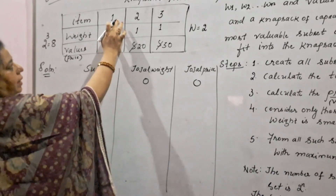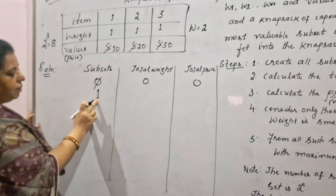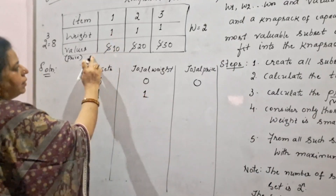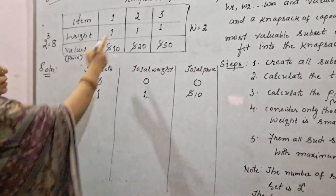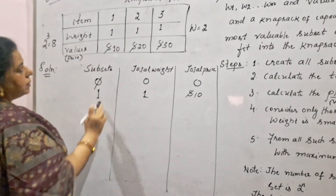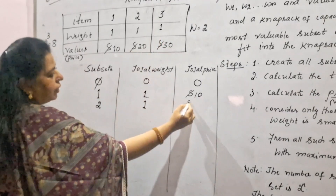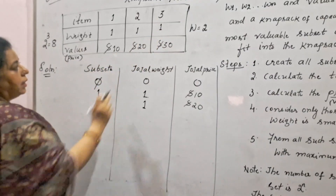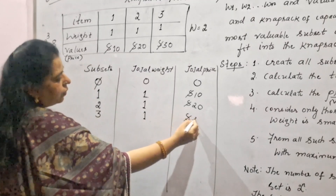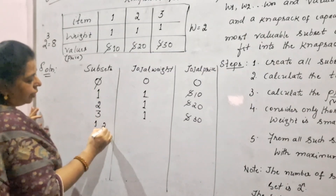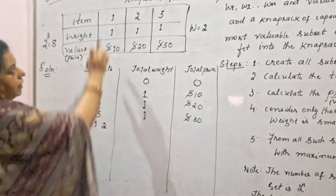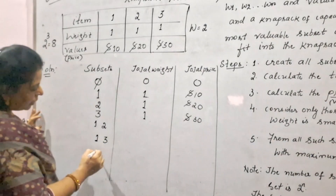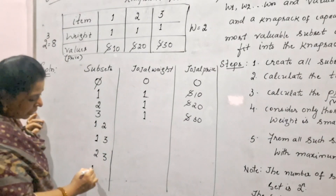Next, create single-element subsets: item i1 has weight 1 and price $10; item i2 has weight 1 and price $20; item i3 has weight 1 and price $30. Then create two-element subsets: {i1, i2}, {i1, i3}, and {i2, i3}. Finally, the last subset combines all three items: {i1, i2, i3}.